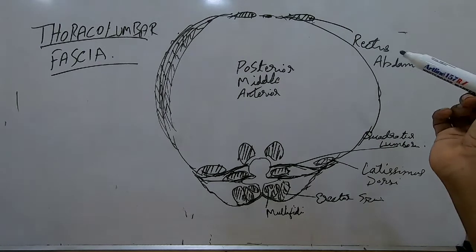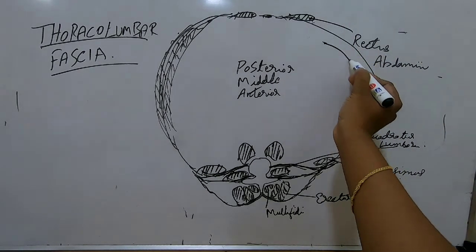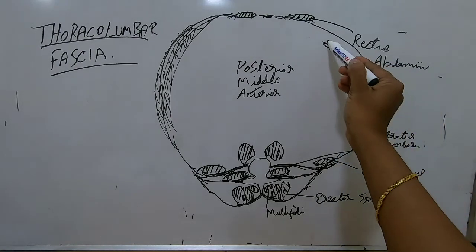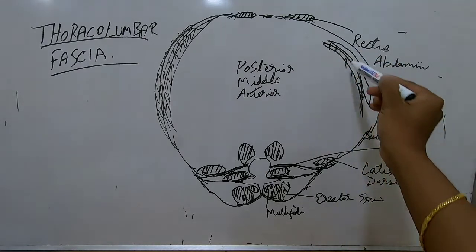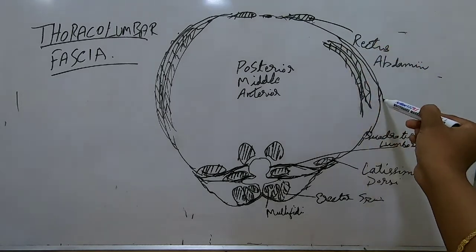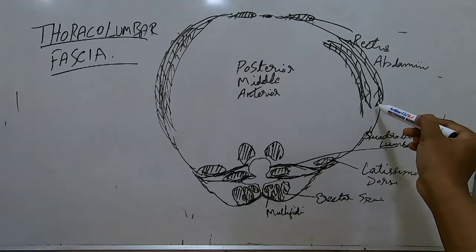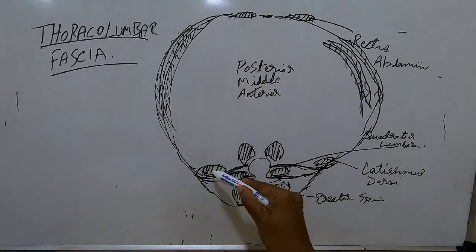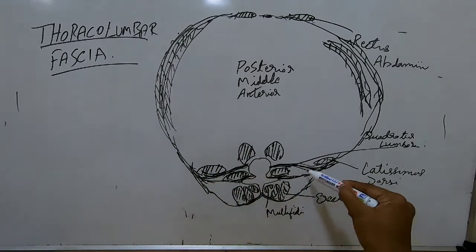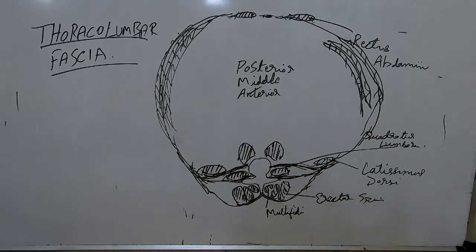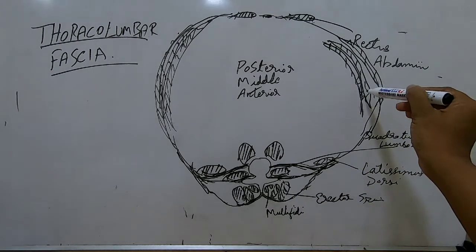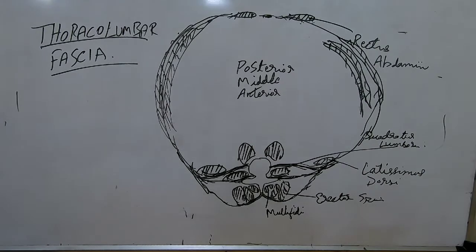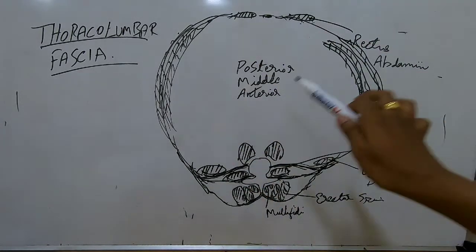The three abdominal muscle layers are: the deepest is transverse abdominus, then internal oblique, then external oblique. These three layers of the thoracolumbar fascia go on to attach to the anterior abdominal muscles, including rectus abdominus.